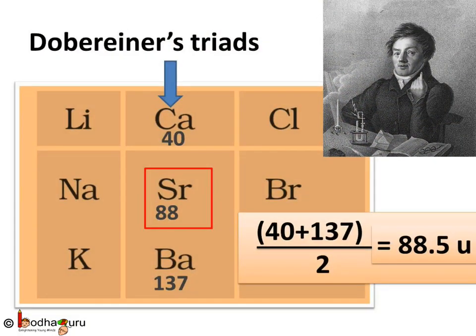The second triad consists of calcium, strontium, and barium. The atomic mass of calcium is 40 and that of barium is 137. The arithmetic mean of the atomic masses of these two elements is (40 + 137) ÷ 2 = 88.5. Strontium, which is the middle element in this triad, has an atomic mass equal to 88, which is approximately equal to the arithmetic mean of the atomic masses of calcium and barium, which is 88.5.